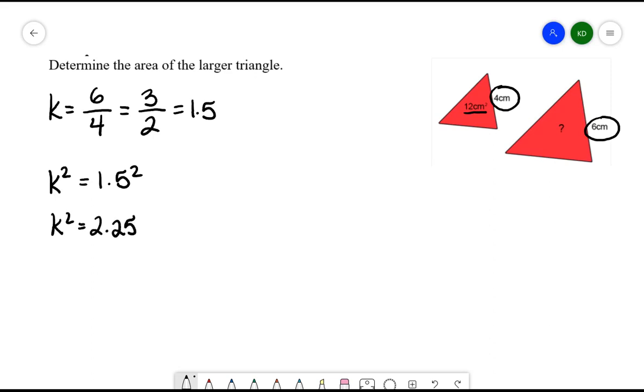So what this means is that when I am scaling the triangle up, the side lengths are going to increase by a factor of 1.5, but the area is going to increase by a factor of 2.25. So if the smaller area is going to be 12 centimeters squared, and it's going to increase by a factor of 2.25, I'll multiply those together, which gives me 27 centimeters squared, and this gives me the area of the larger triangle.